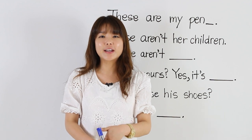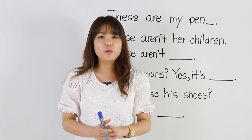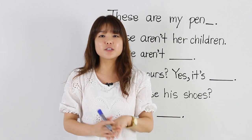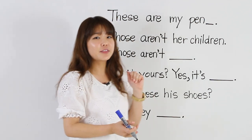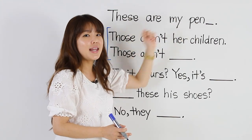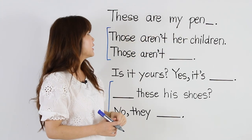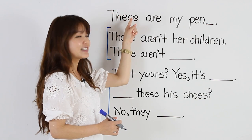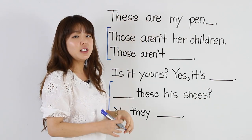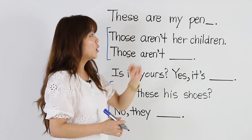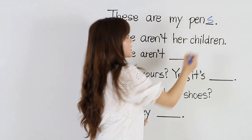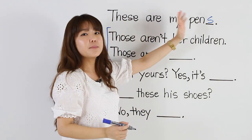We're going to do some more checkup. Now here, I want you to focus on possessive adjectives and possessive pronouns. Let's look at the first example: 'These are my pen.' We have 'these are', which means we need more than one — more than one pen. So we have to put S: 'These are my pens.'